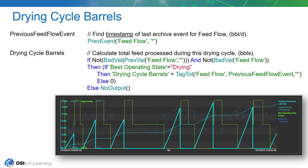And then, if it isn't in drying state, we'll just go ahead and zero it out. That resets the total. So, you can see in the trend below, the cyan line shows you what the results of this calculation look like. Basically, the total ramps during the drying cycle and then gets reset during the regeneration and standby states.